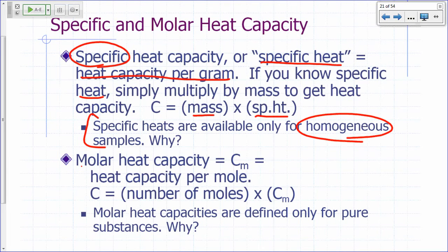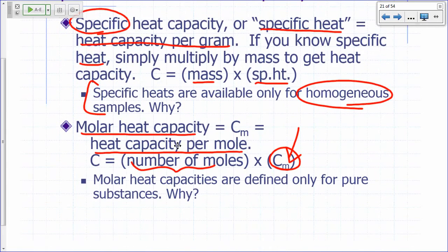Molar heat capacity, on the other hand, is just like specific heat. This one is heat capacity per mole. If you can look up the heat capacity per mole, the molar heat capacity, all you have to do is multiply that by the number of moles. For most substances, heat capacities are actually tabulated on a per mole basis. If you look up heat capacities from tables, handbooks, or online, most of the stuff you'll find for substances are given in molar heat capacities per mole. And they're only defined for pure substances.